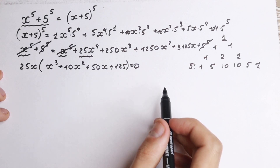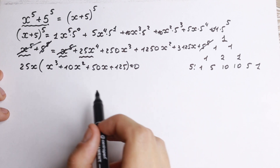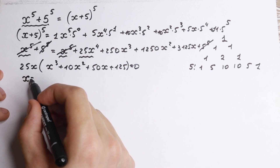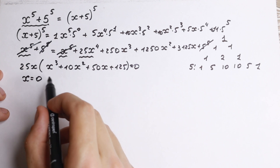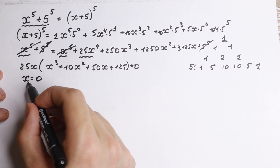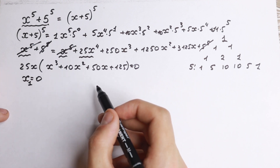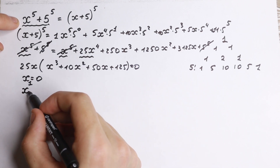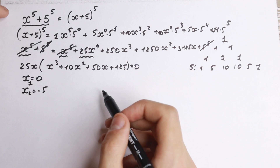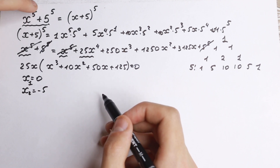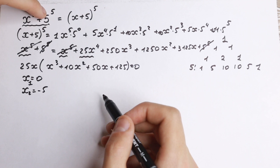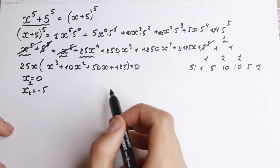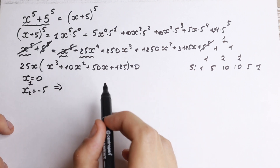We factored out 25x, and if we look closely we can see that x equals 0 is a solution from this factor, since we have a product equal to zero. So x₁ equals 0. Also looking at the original expression, x₂ equals minus 5 is a solution as well, because with the odd fifth power, minus 5 to the fifth plus 5 to the fifth gives us 0 on the left, and minus 5 plus 5 to the fifth power gives 0 on the right.